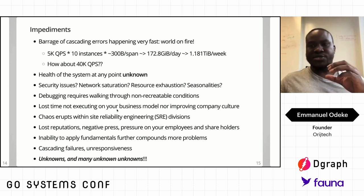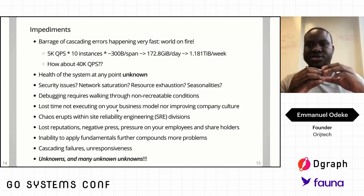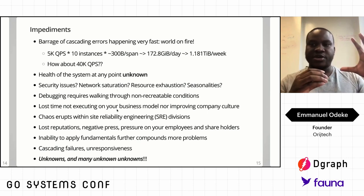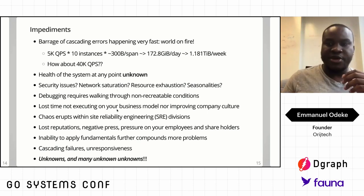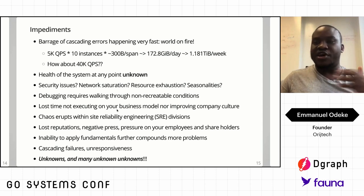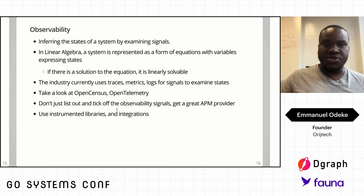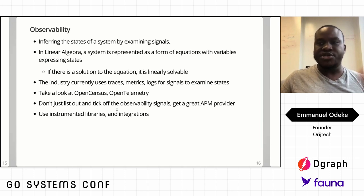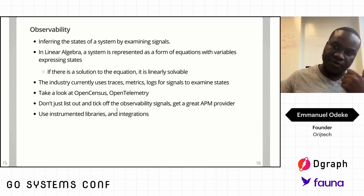Some of these problems come from the inability to apply fundamentals. Remember, we started with small systems — if we can tame the small systems as they grow bigger, we can also tame those larger ones. Things get a lot better. There are so many unknowns and even unknown unknowns. Observability is what helps manage this.